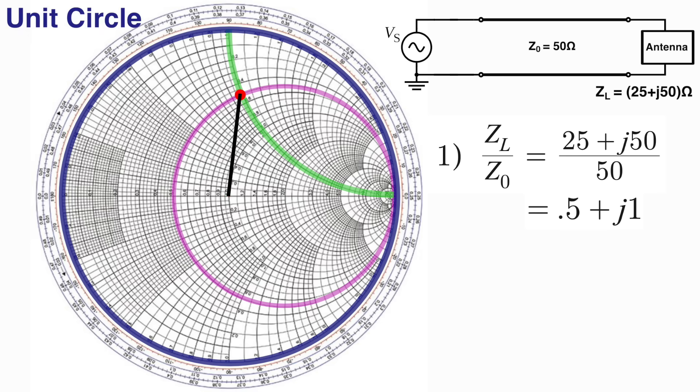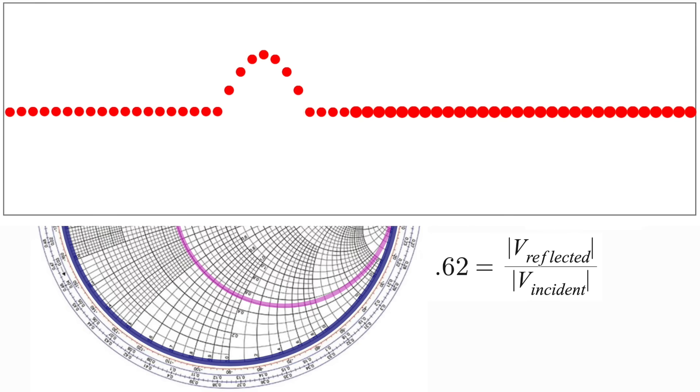So in this case, and you'll typically have a little scale below your Smith chart, that distance away is just about 0.62, meaning the ratio of the reflected wave voltage to the incoming or incident wave voltage is 0.62. So if the incoming wave had an amplitude of 10, the reflected wave will have an amplitude of 6.2.